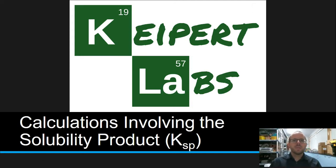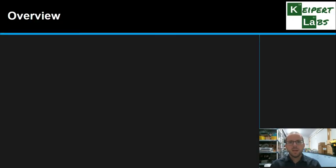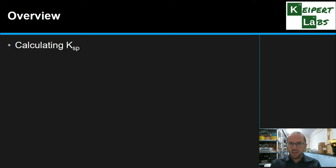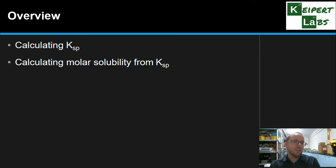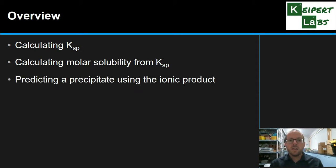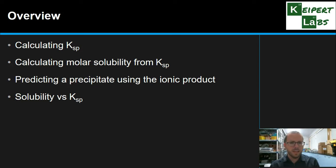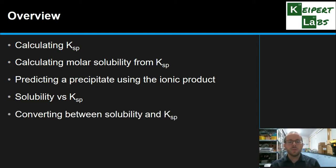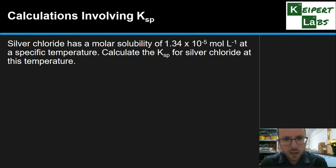Hi everyone, welcome to this episode of Kaipit Labs. In today's video we're going to go through calculations involving the solubility product or KSP. We've introduced this idea of KSP as something that describes the equilibrium for really sparingly soluble ionic compounds. We're going to look at how to calculate KSP, how to use KSP values to calculate molar solubility, how to predict precipitate formation using the ionic product, and how to convert between solubility and KSP. We've got around five or six sample calculations to walk through.